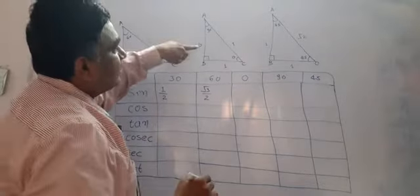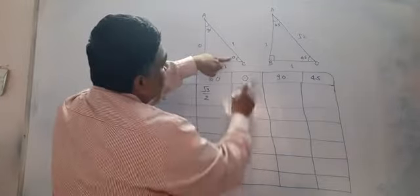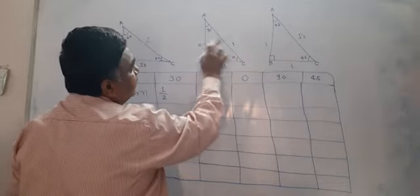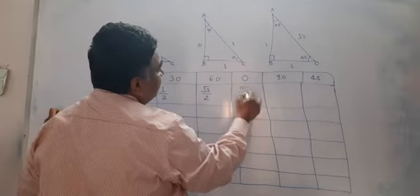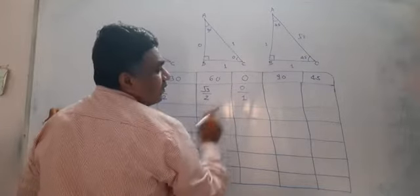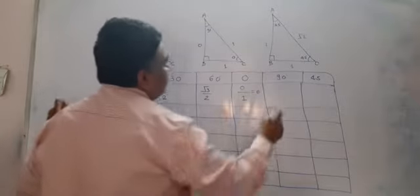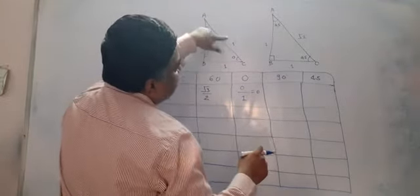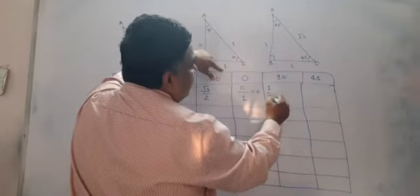If you go for sine 0, opposite side upon hypotenuse gives 0 upon 1, which equals 0. Now go for sine 90 — opposite side upon hypotenuse gives 1 upon 1, which becomes 1.